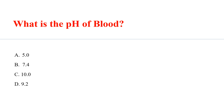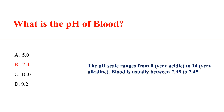What is the pH of blood? The answer is 7.4. The pH scale ranges from 0, very acidic, to 14, very alkaline. Blood is mostly between 7.35 to 7.45.